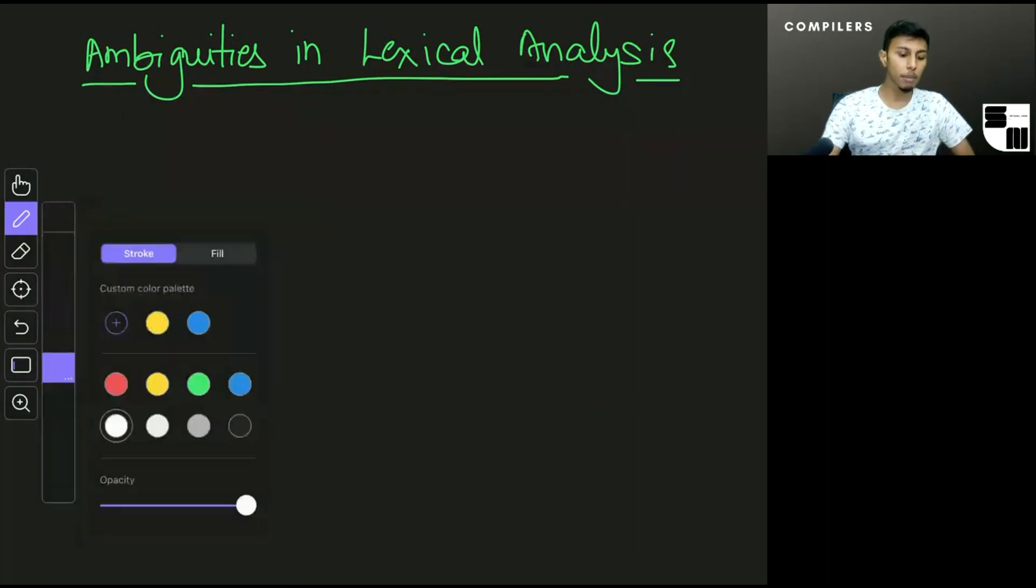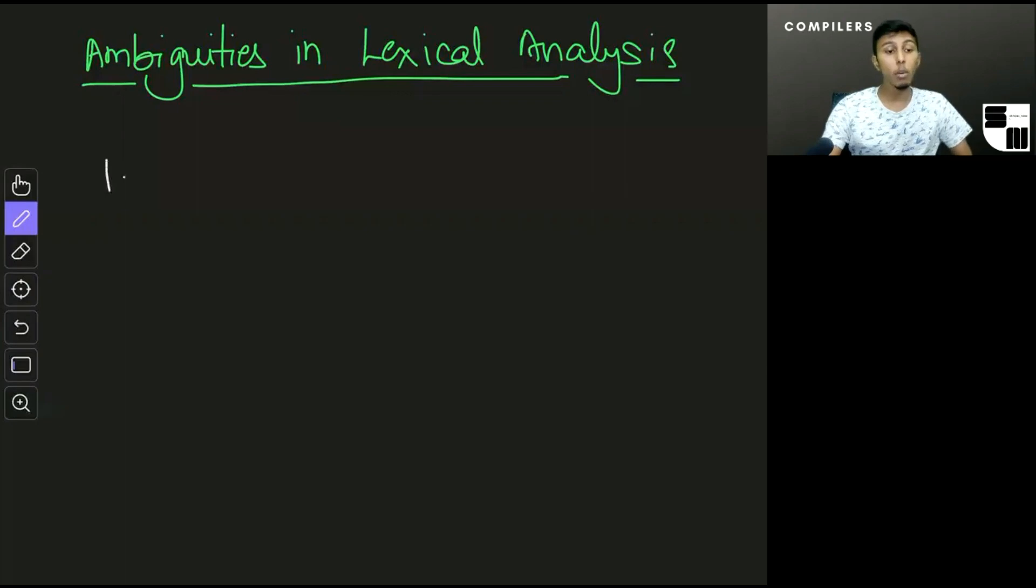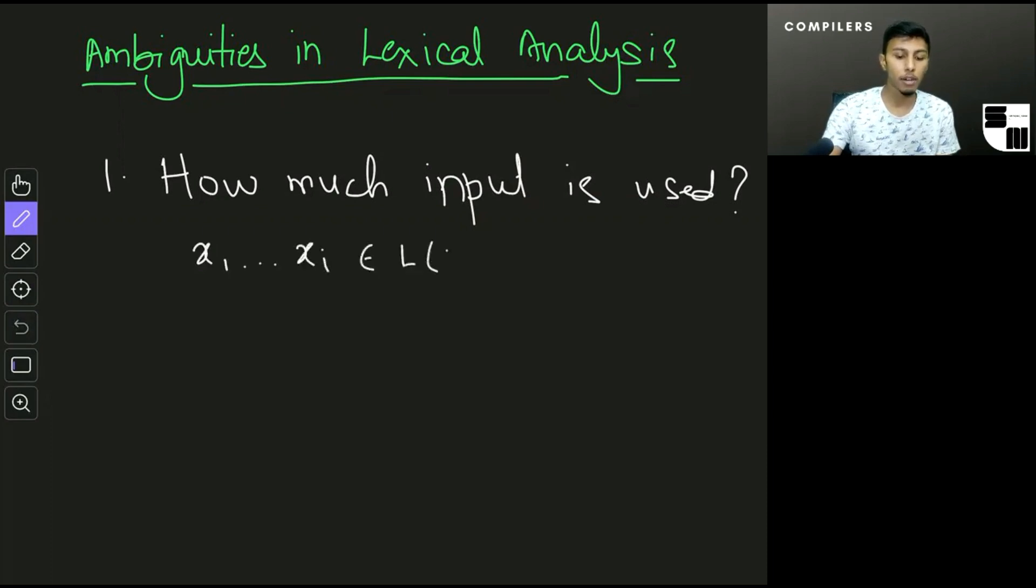So the first ambiguity we have is the one that we discussed previously, which is how much input is used. The question, to put it more formally, is: what if x1 through xi belongs to L of R, but x1 through xj also belongs to L of R, and of course i is not equal to j.